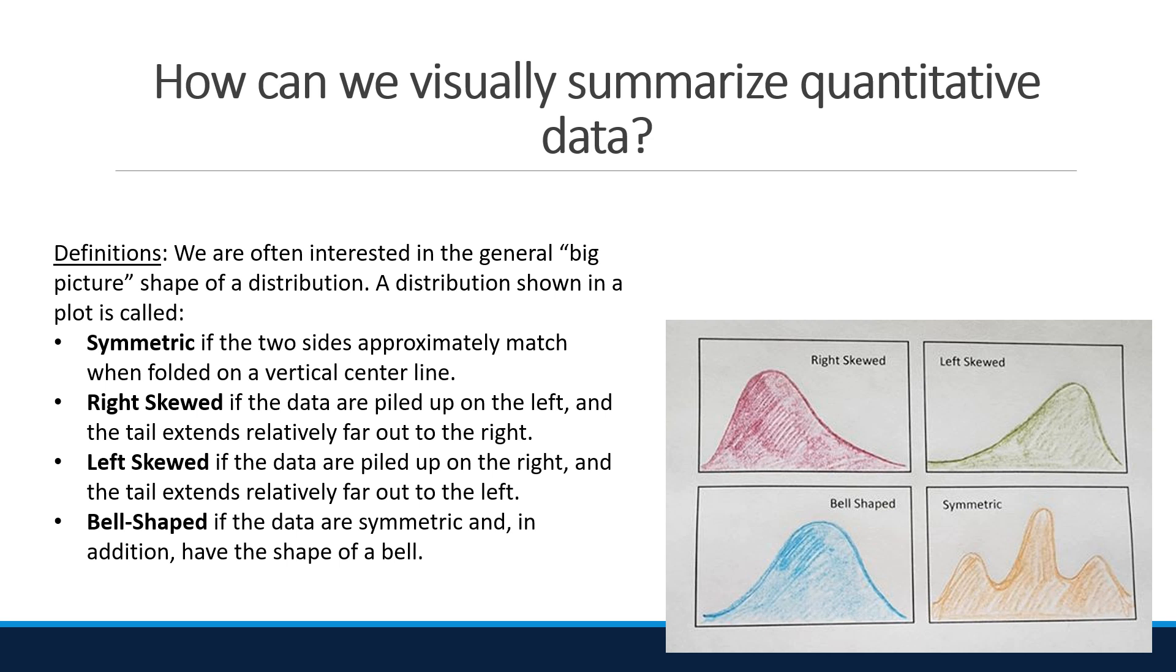Bell-shaped if the data is symmetric and in addition has the shape of a bell. You may have heard of a normal distribution or a t-distribution. These are both examples of bell shapes. Of course, many other shapes are also possible. When describing the shape of a data set, we are looking for the overall pattern. No plot will be perfectly symmetric.